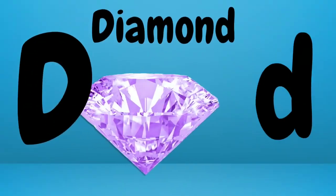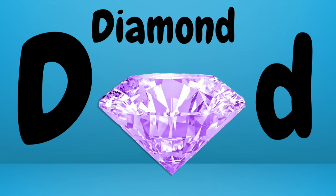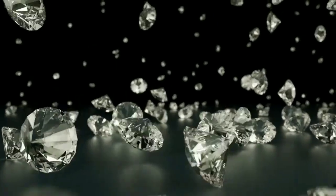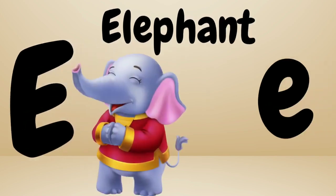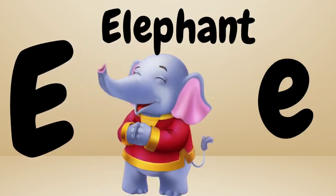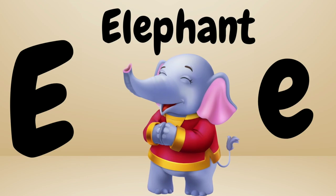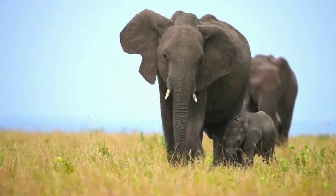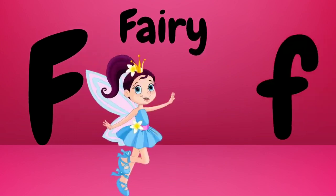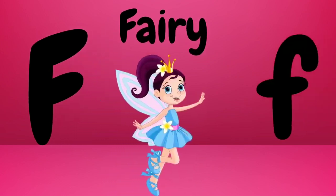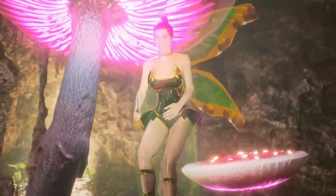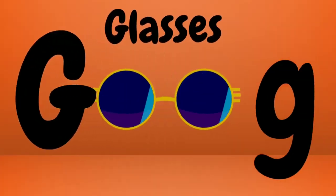D is for diamond. Diamond, diamond — this is a diamond. E is for elephant. Elephant, elephant — this is an elephant. F is for fairy. Fairy, fairy — this is a fairy. G is for glasses.